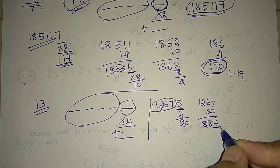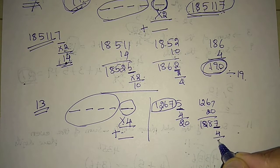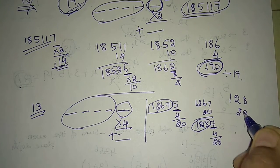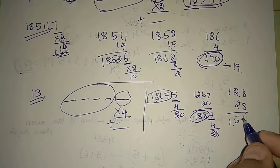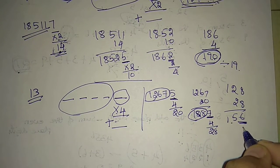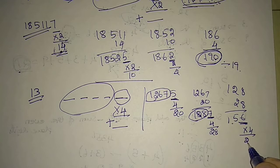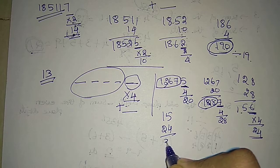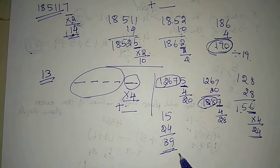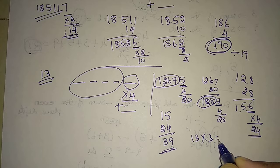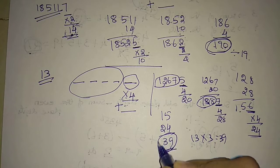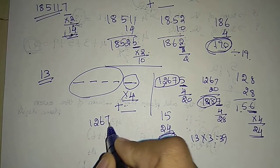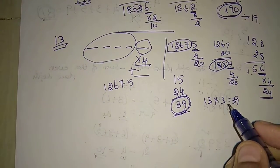Again, take the last digit, multiply by 4 — answer is 28. Add it with the remaining digits — we get 156. Again, take the last digit, multiply by 4 — answer 24. Add it with the remaining digits: 15 plus 24 — answer 39. Since 13 times 3 is 39, 39 is divisible by 13. Hence, the whole number 12675 is divisible by 13.